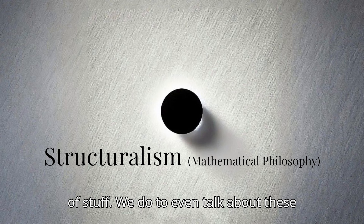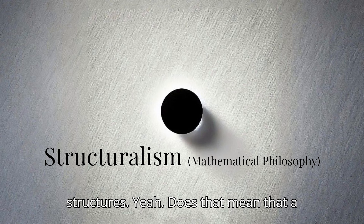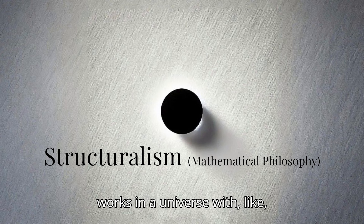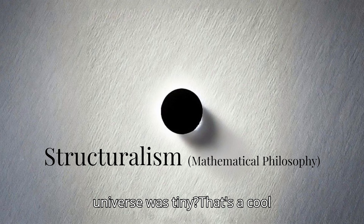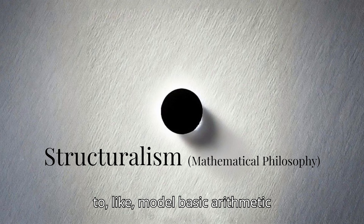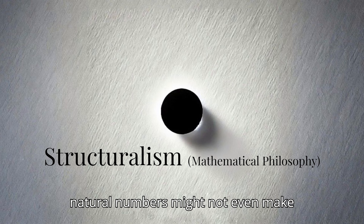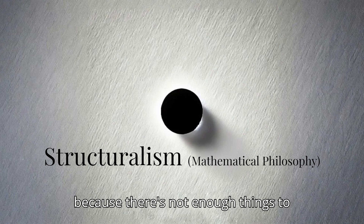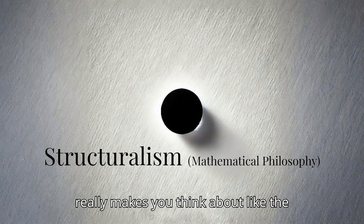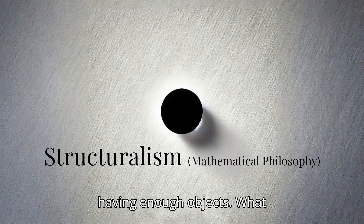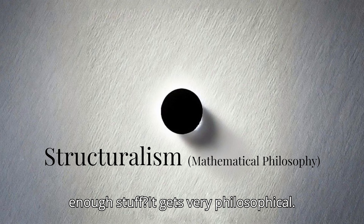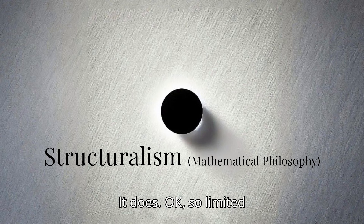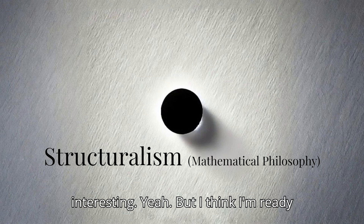That raises a thought experiment: does eliminative structuralism only work in a universe with infinite objects? Imagine a universe so small it doesn't even have enough objects to model basic arithmetic. In that universe, the structure of natural numbers might not even make sense — one plus one might not even equal two, because there isn't enough stuff to count. If structures depend on having enough objects, what happens when we don't? It gets very philosophical, and it reveals real limits of this approach.